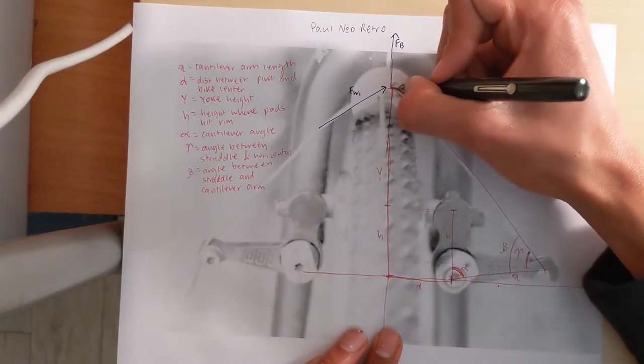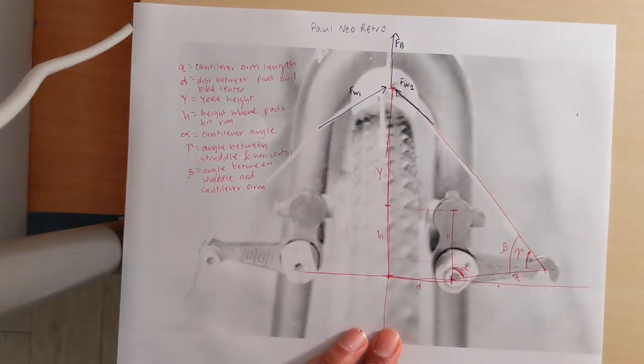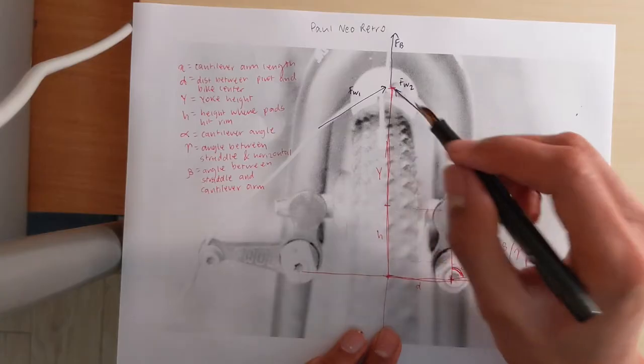Fw1 and Fw2, which are the forces in each of the sides of the straddle wire. Now we can see Fw2 and Fw1 are the same.